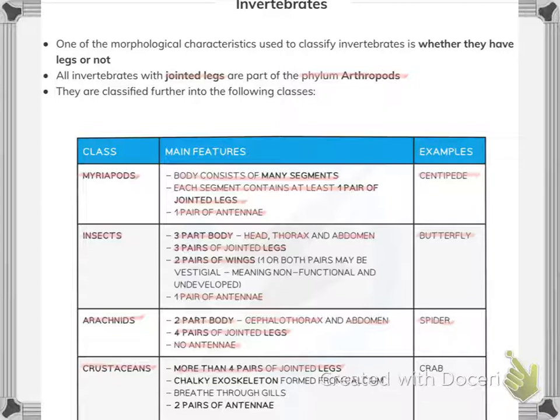Crustaceans have more than four pairs of jointed legs, a chalky exoskeleton formed from calcium, breathe through gills, and have two pairs of antennae. An example is the crab.